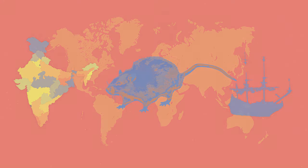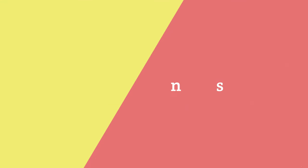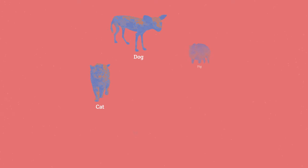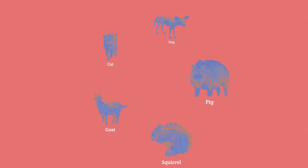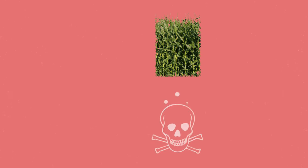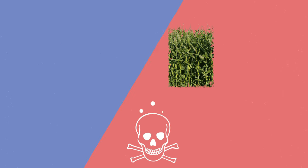Although some of the worst invasive species are common animals such as wild dogs, cats, pigs, goats, and grey squirrels, the problem is that outside of their native ecosystem they cause havoc to crops, food webs, and spread disease.